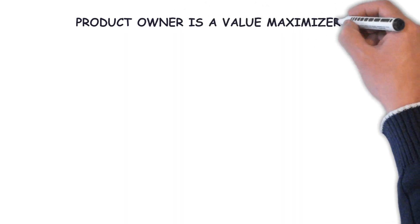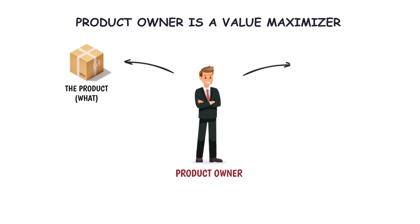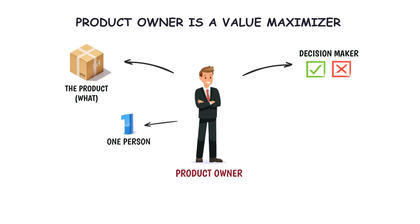The product owner is a value maximizer. A product owner is responsible for what will get developed and in what order. It works when everyone must respect the product owner's decisions. These decisions are visible in the content and ordering of the product backlog, and through the inspectable increment at the sprint review. The product owner is one person, not a committee.